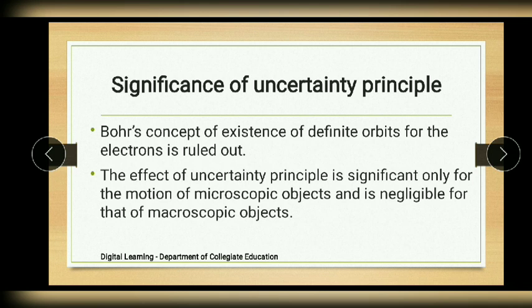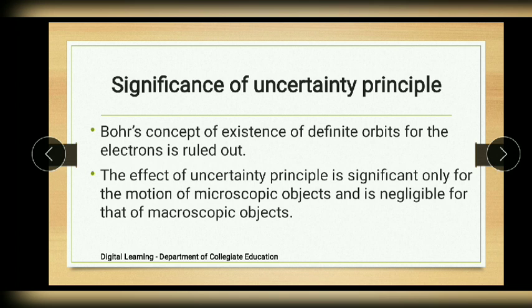The significance of the uncertainty principle is that it ruled out Bohr's concept of definite orbits for electrons, and suggested that it is only possible to predict the probability of finding an electron moving with a particular velocity in a given region of space around the nucleus. Also, the effect of the uncertainty principle is significant only for microscopic objects like electrons and is negligible for macroscopic objects.